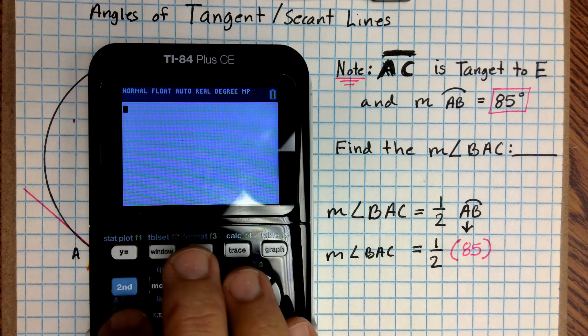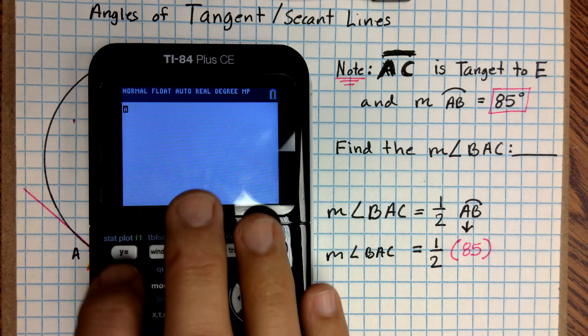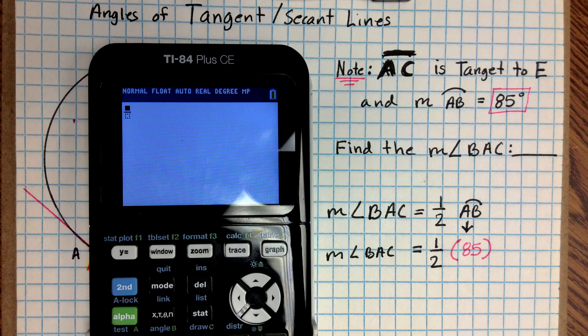So I'm going to enter this into the calculator. So I'm going to do alpha y equals enter. And it's going to give me 1 over 2. And then I'm going to multiply that to 85. Now I am going to put a decimal in it after the 85 to make sure that it converts us to a decimal answer.